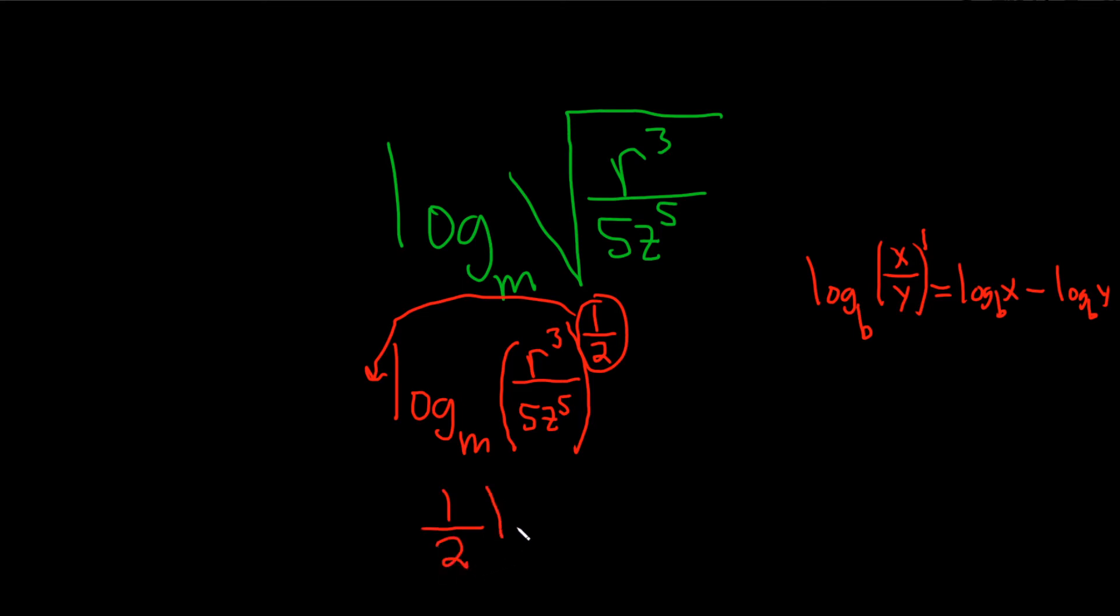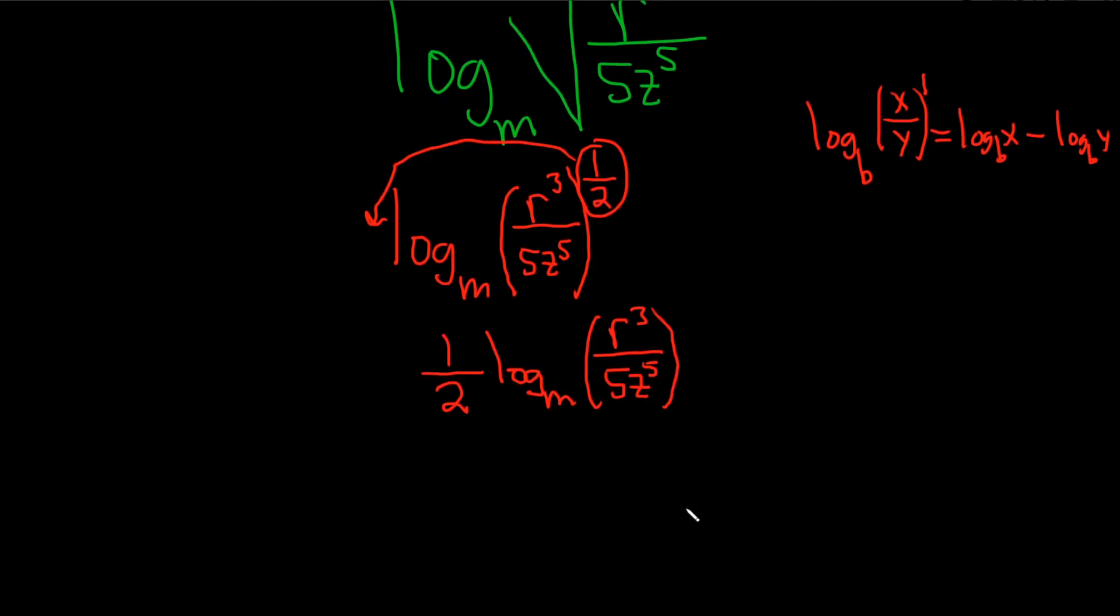That's why we have to take this one-half and put it in the front using what's called the power rule. So we have one-half times the log base m of all of the stuff here, r cubed over 5z to the 5. Not my favorite variables, 5s and zs.